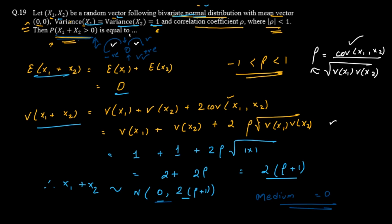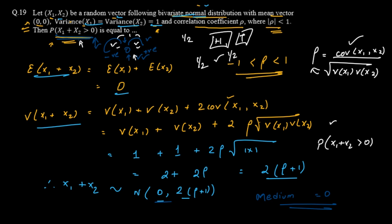Because the median is 0, the probability of x₁ + x₂ being positive equals the probability of it being negative — similar to flipping a coin where heads and tails have equal probability. Therefore, P(x₁ + x₂ > 0) = 1/2. The answer is 1/2, or 50% probability.